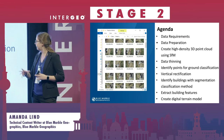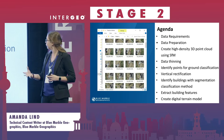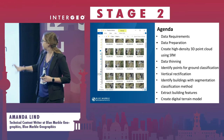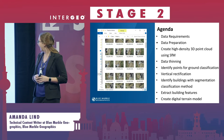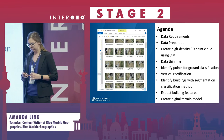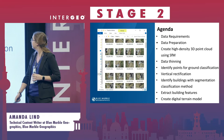We can classify building features, vegetation features, just about anything. You can rectify it to increase the vertical accuracy, and then extract those building features that you've collected.